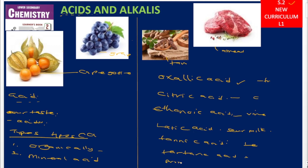We also have tartaric acid, which is found in grapes. Then there is formic acid, also called methanoic acid, which is found in bee stings — when a bee stings you, it injects this acid, causing swelling and pain around the stung part. Red ants also contain methanoic acid. Even our stomachs contain a naturally occurring acid, which is HCl — hydrochloric acid.